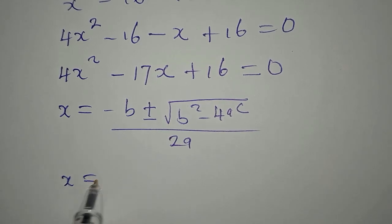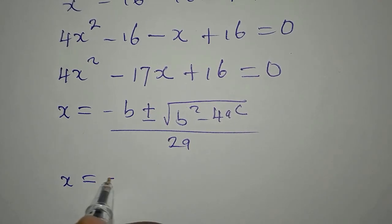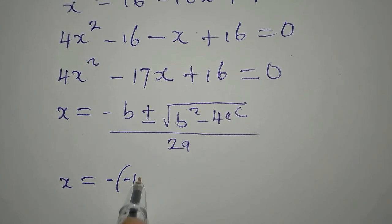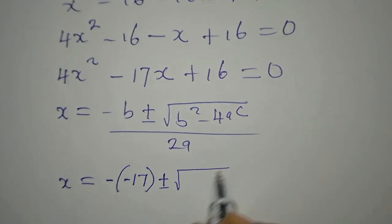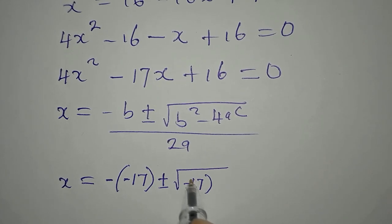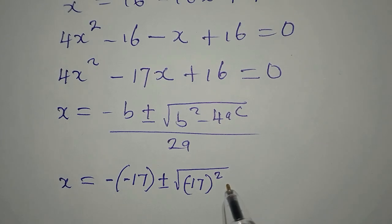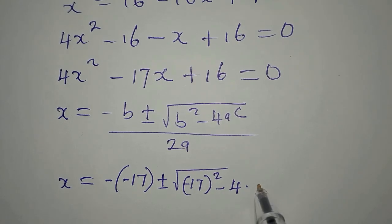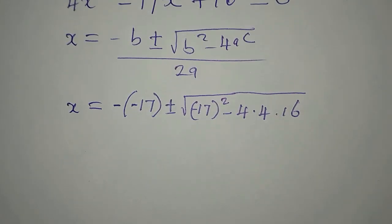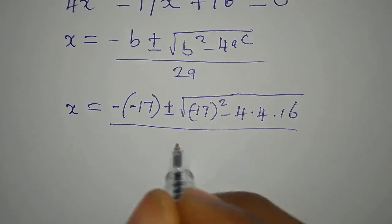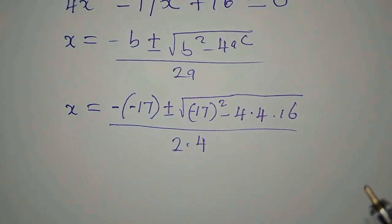So our x becomes in place of minus b, you write minus minus 17, then plus or minus we have negative 17 squared, then minus 4 times a is 4 again times 16, then all of this is over 2 times 4 because a is 4.